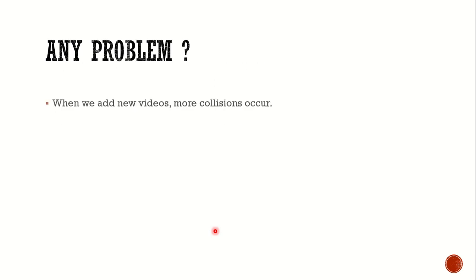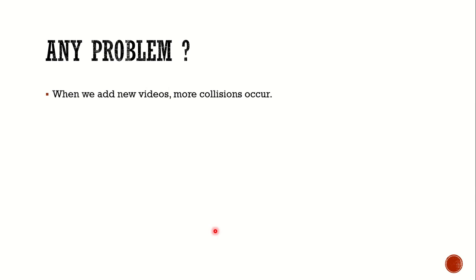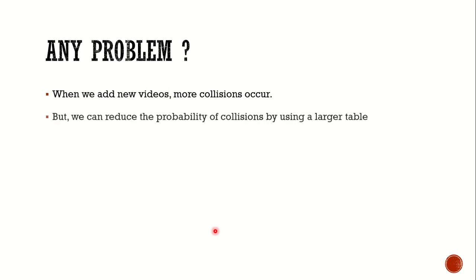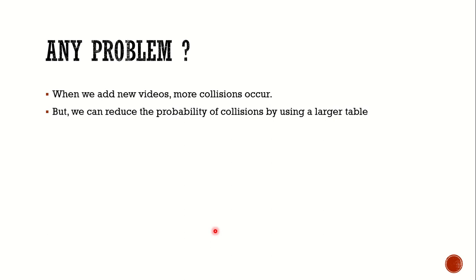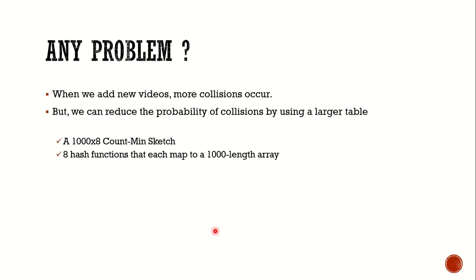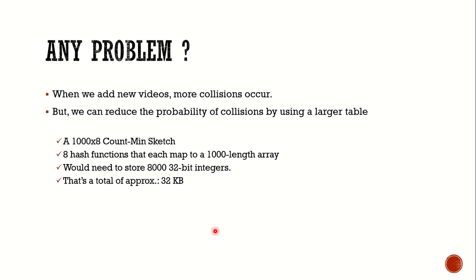There is a drawback though: when we add new videos, the chances of collisions also increase. But that can be solved by simply using a larger table. For example, if we use a Count Min Sketch of 1000 by 8 — that is, 8 hash functions each mapping to a 1000-length array — we would only require 8,000 32-bit integers, which is approximately 32 KB.